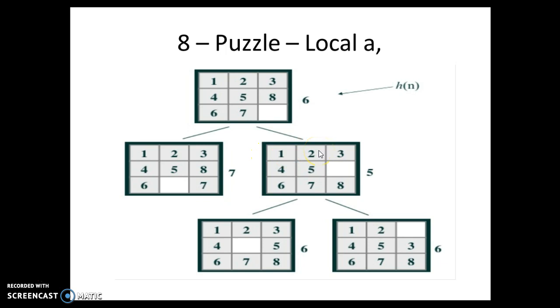As we already mentioned, that in this particular example, lesser the heuristic value, it is the better function. Because we are calculating it for the number of misplaced tiles. So we have 5 here. So obviously, from my current state, I will be moving to this state.